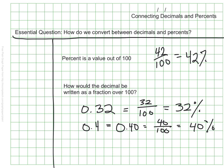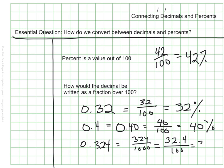Sometimes we have values that are past the hundredths, such as 324 thousandths. We would write this fraction as 324 thousandths. And if we wanted to make that into hundredths, we'd write 32 and 4 tenths over 100 — not that we would ever write a decimal in a fraction — but that would tell us that this would be 32 and 4 tenths percent. So sometimes we have a decimal in our percent.